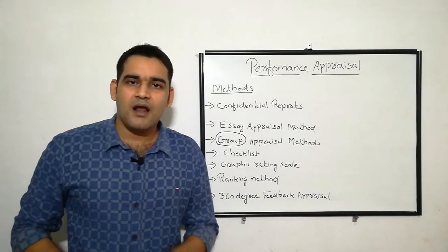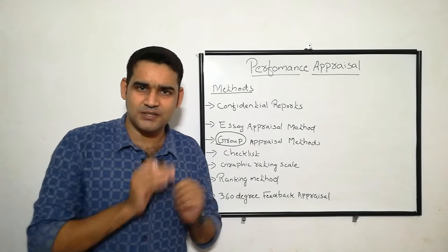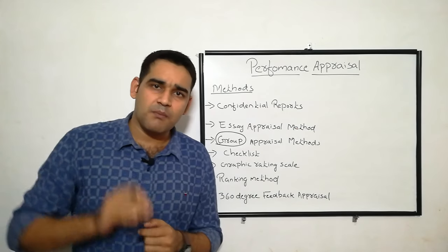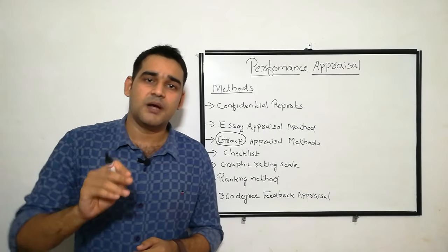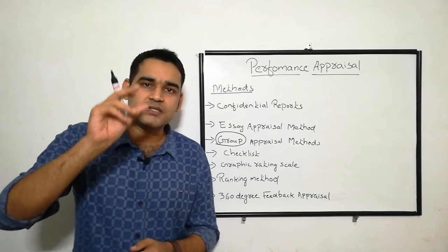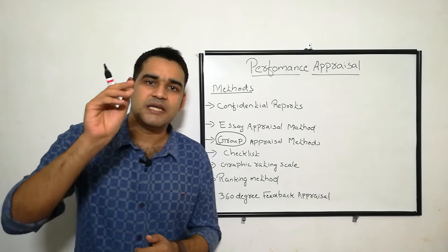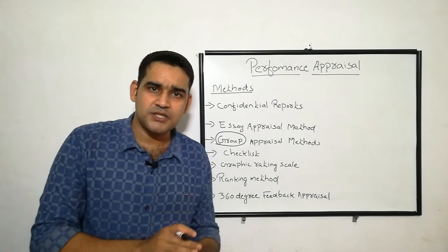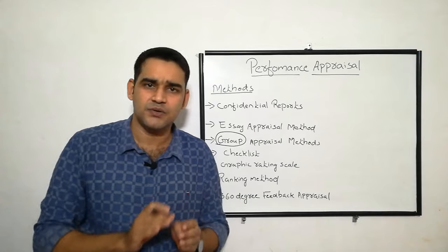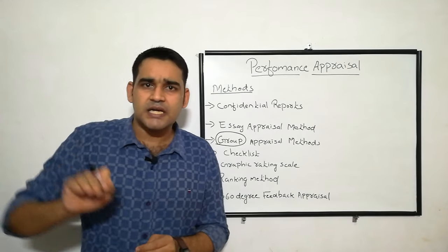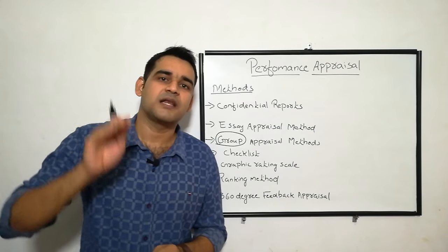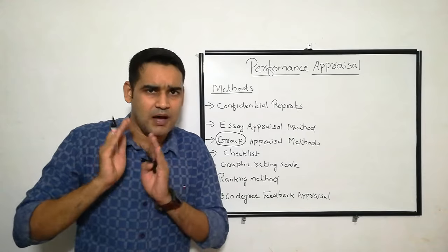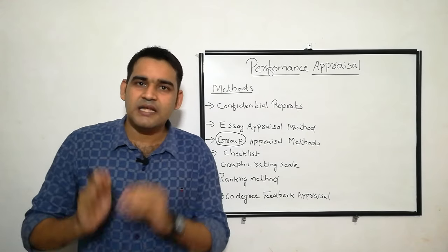Next one is ranking method. It is familiar — just like in school, the overall mark is taken and whoever gets more marks is number one, rank two, and so on. Similarly in performance appraisal, regarding punctuality, behavior, productivity, attitude — the overall score is taken and a ranking is done. Whoever scores more marks overall is rank number one, rank number two, and so on.